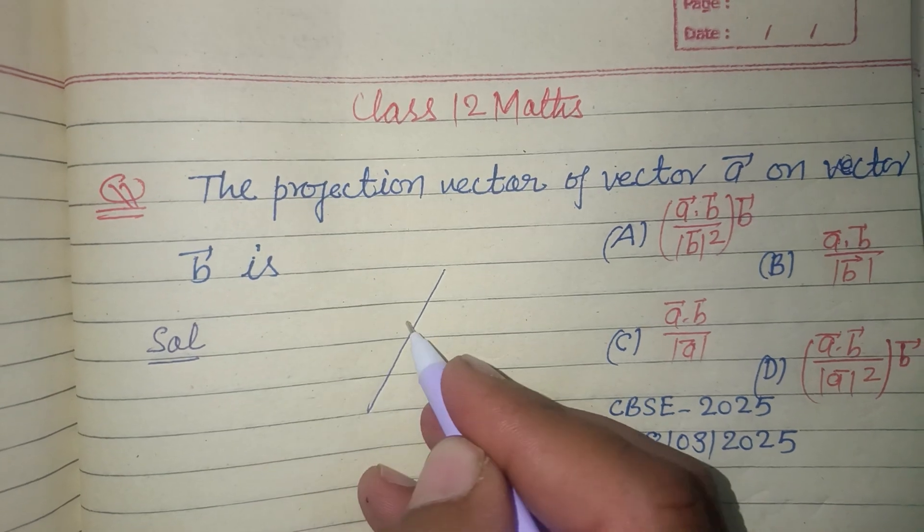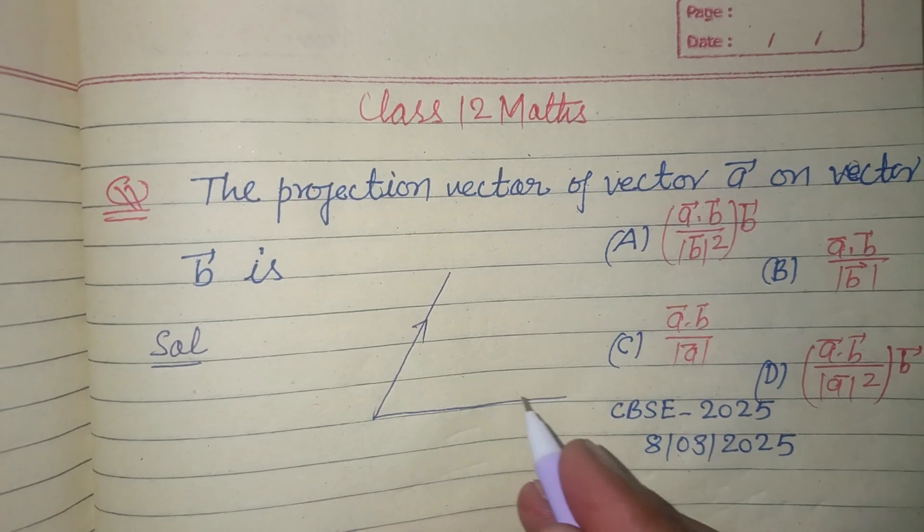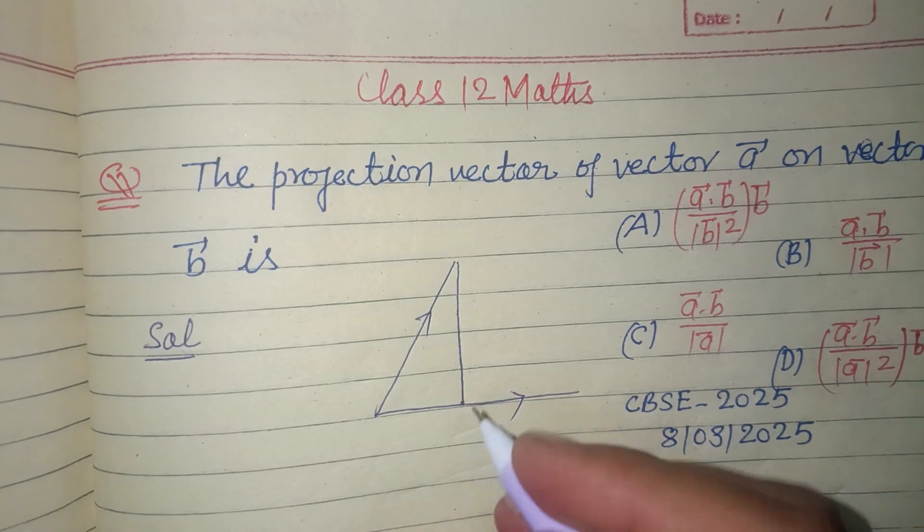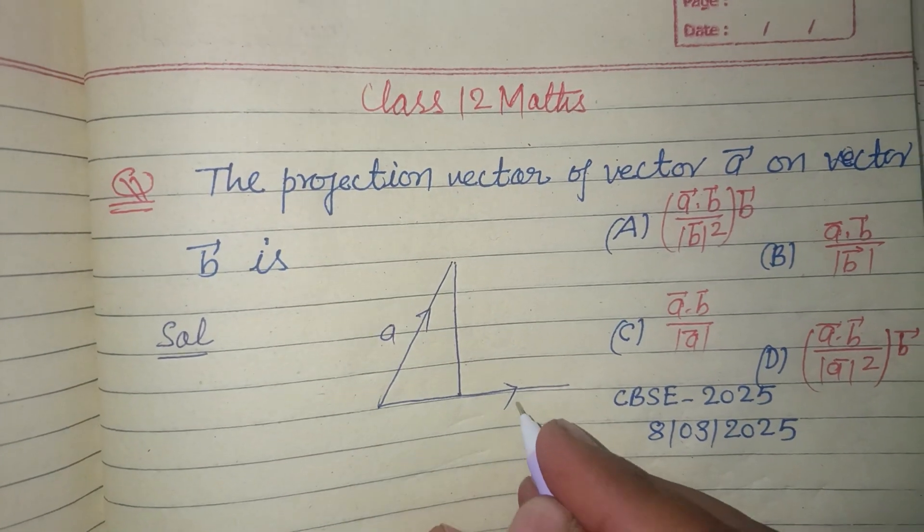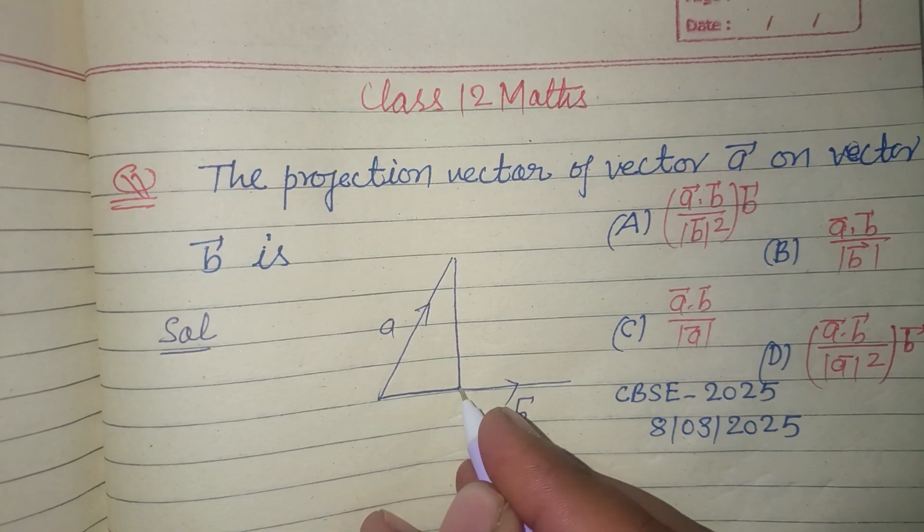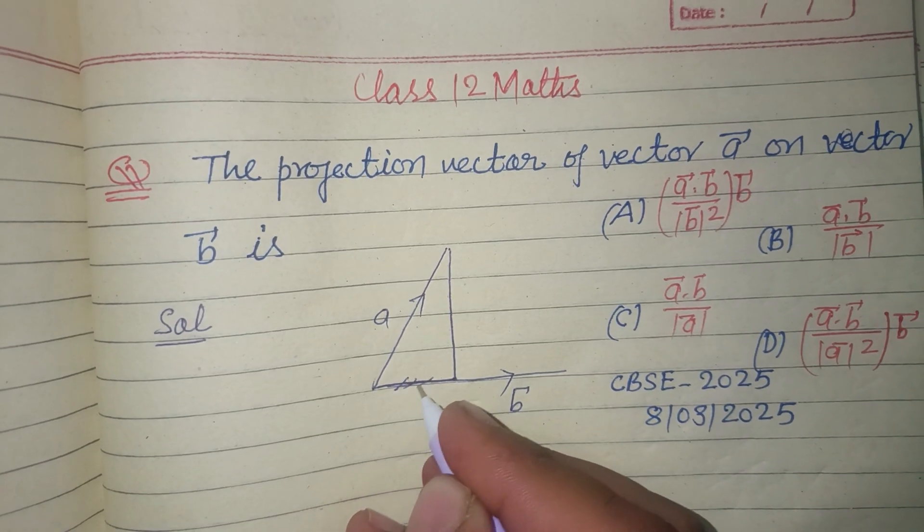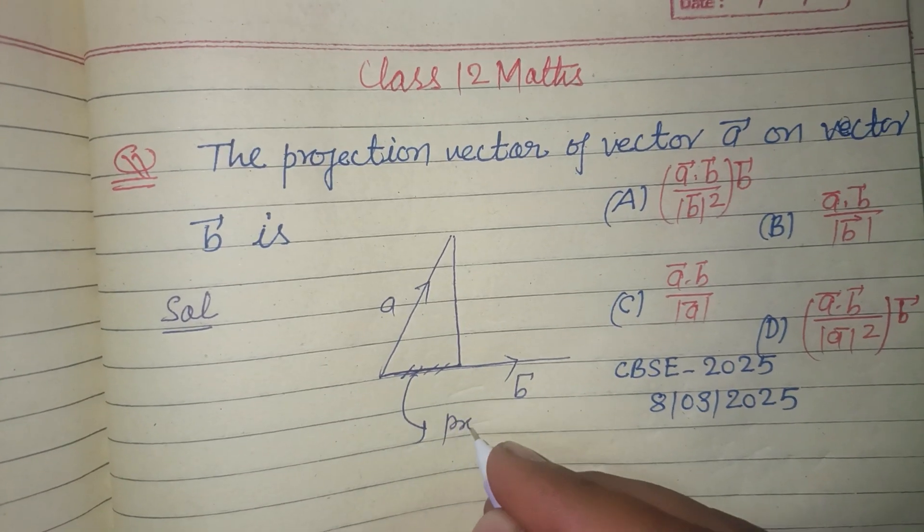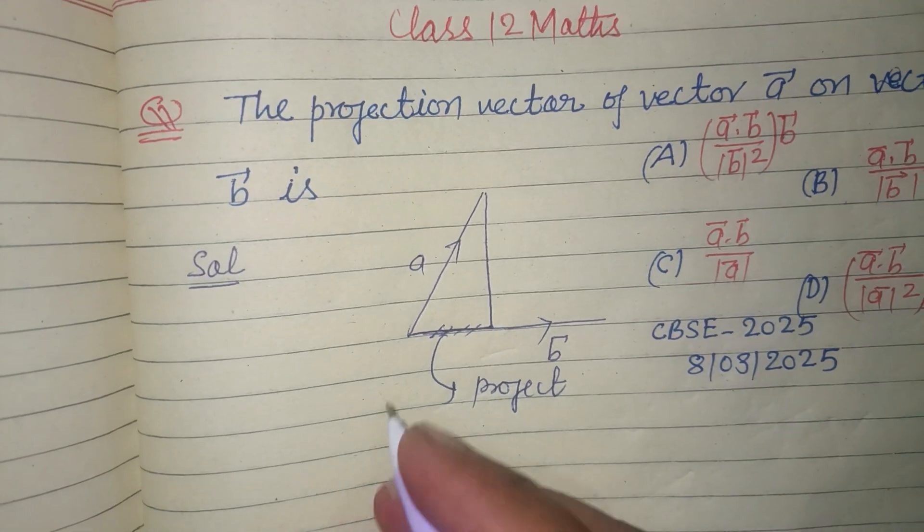And you know that if this is vector a and this is vector b, then the projection is the shade of vector a on vector b. This part is called projection, and this part will be...